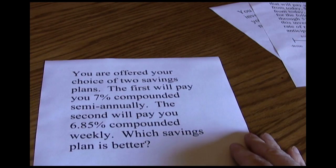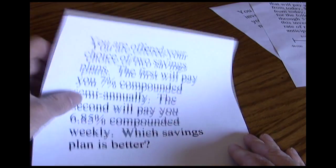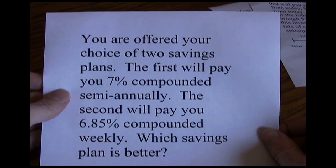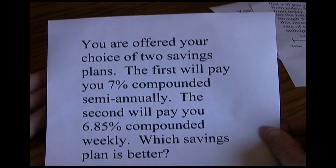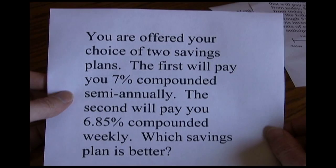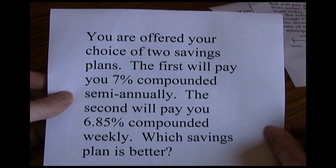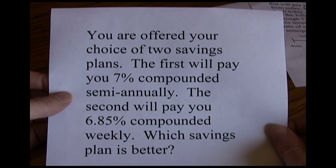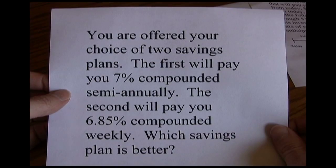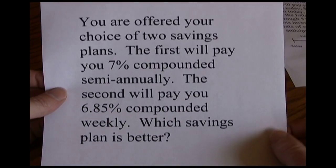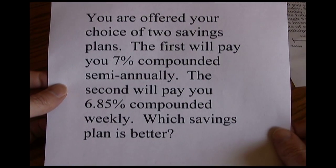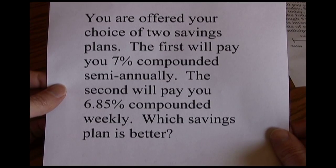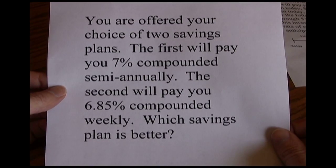In our last problem we're going to do something a little different. Instead of looking at net present value, present value, or future value, we're looking at two different savings alternatives. Here we're offered a choice of two savings plans. The first will pay 7% compounded semi-annually. The second will pay 6.85% compounded weekly. We want to know which alternative is better.